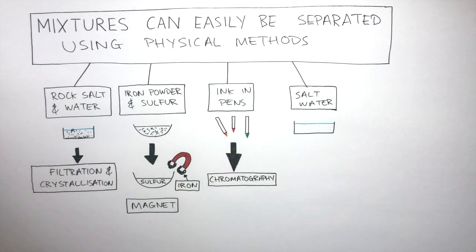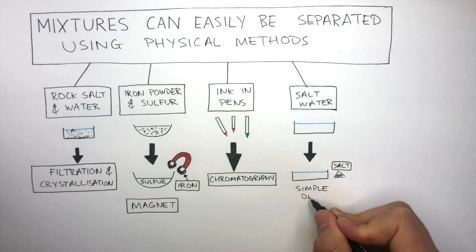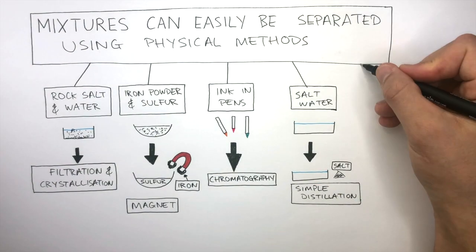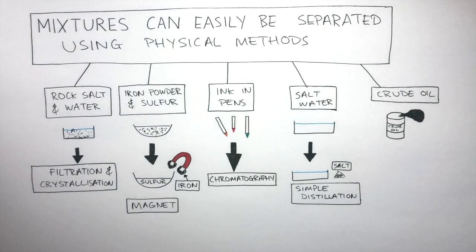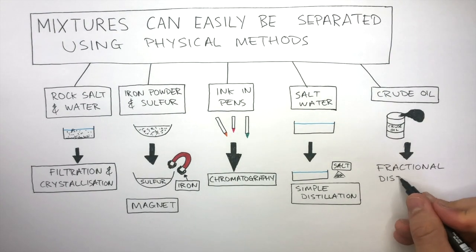Salt water, which is salt dissolved in water, can be separated using simple distillation. And finally, crude oil can be separated using fractional distillation.